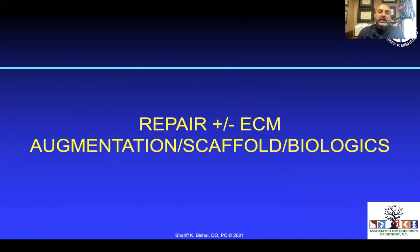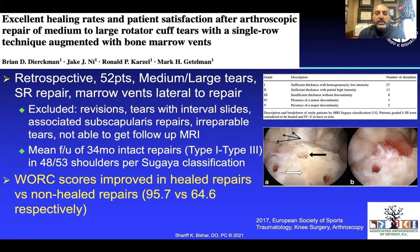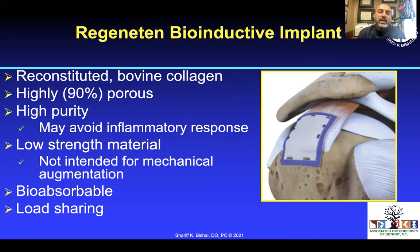Regarding external matrices, scaffolds, biologics, and augmentation: one of the most common things we do is marrow venting, which brings pluripotent cells helpful for repair. Brian Dirkman and Mark Gettleman looking at single-row with marrow vents found improvement from 65% to 96% compared to non-vented patients — so local biologics have value. Regenitin is a bioinductive implant — reconstituted bovine collagen, about 90% porous, that fits over the rotator cuff. It can be used for medium to large tears, particularly in patients with thinner tissue, smokers, diabetics, to feel more confident with the repair.